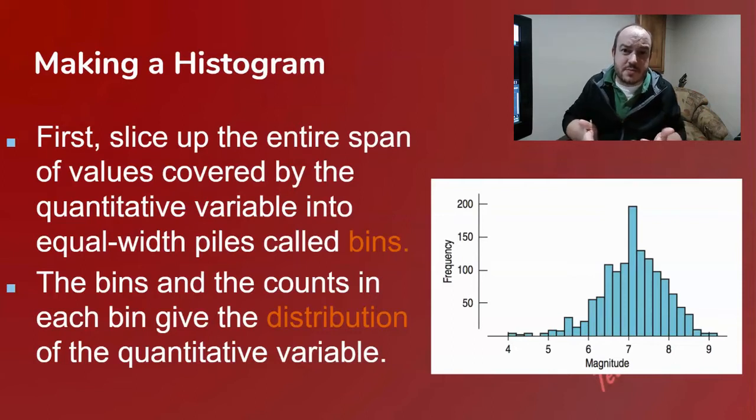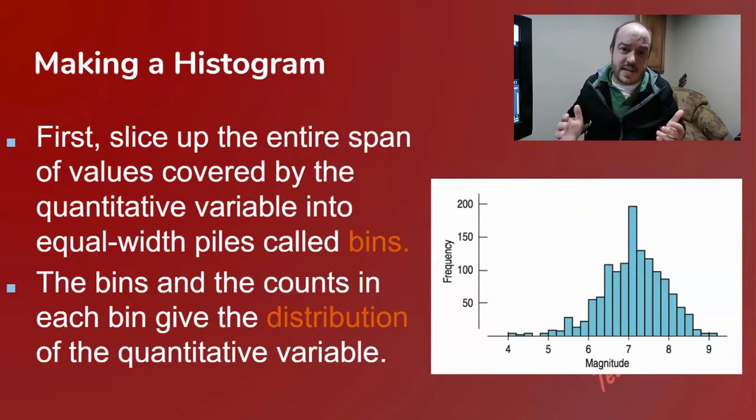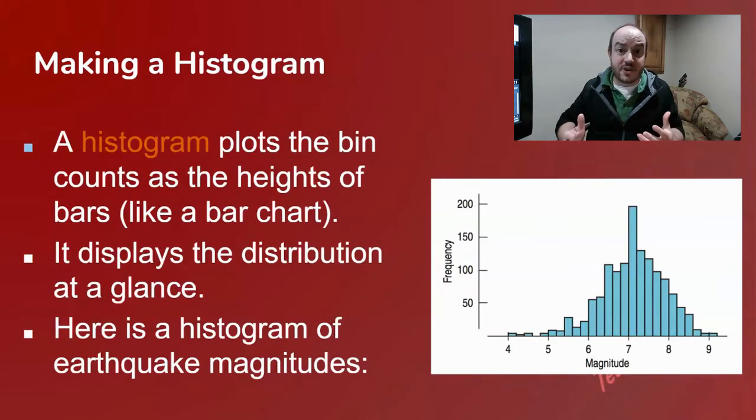We then place all these bins on our graph to create our distribution. Now a distribution is just when you're looking at all of your data as a whole. That's where you notice your patterns or your trends. It's where you're able to describe the data as a group. That's your distribution.